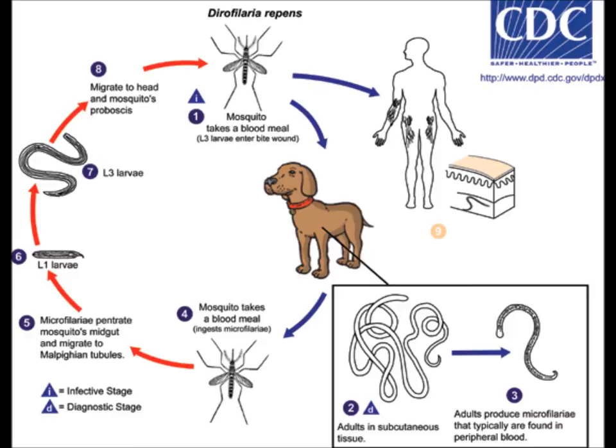When the mosquito then bites another dog, cat, or susceptible animal, the infective larvae exit the mosquito's mouthparts and are deposited onto the surface of the animal's skin. The infective larvae can then actively enter the new host through the fresh bite wound.